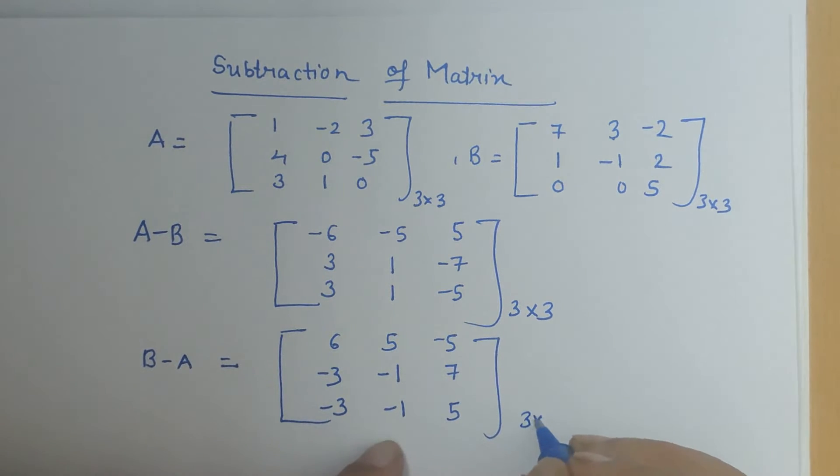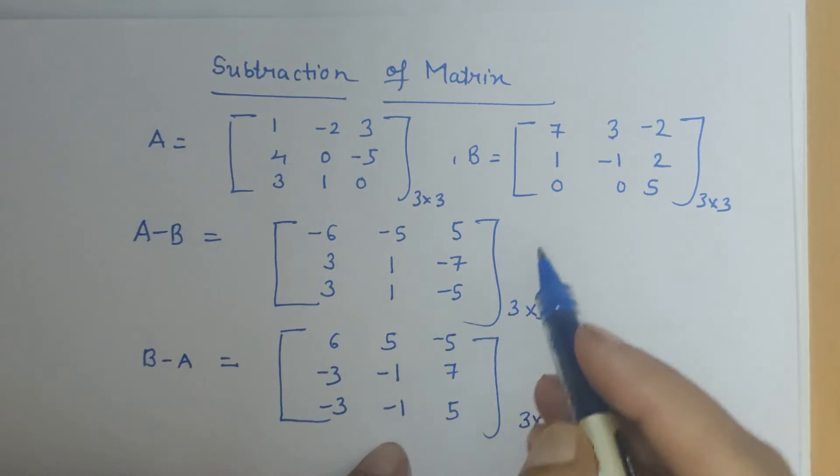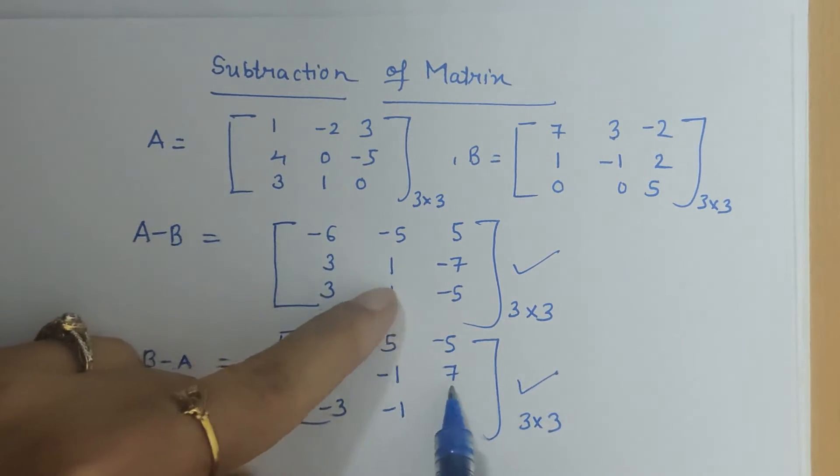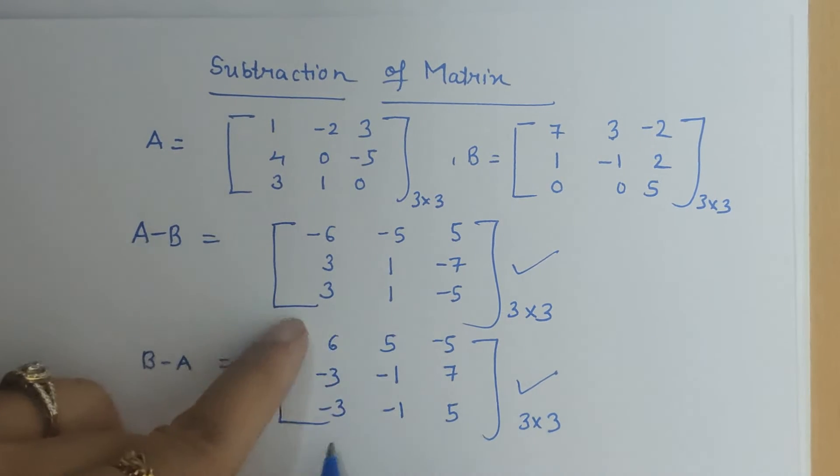So again we got a 3 by 3 order matrix and when we compare A minus B and B minus A, we see that the elements are not same, they have different result, isn't it?